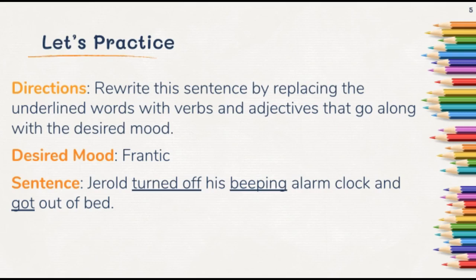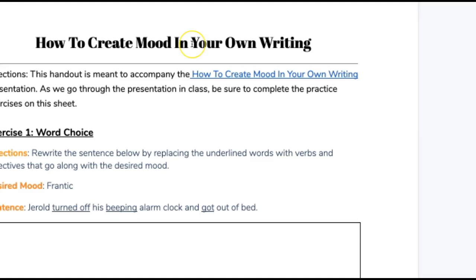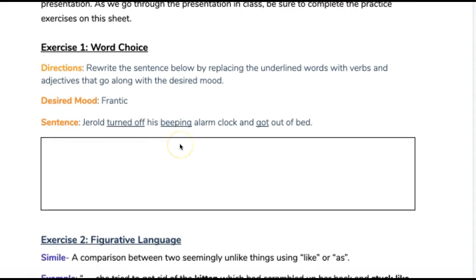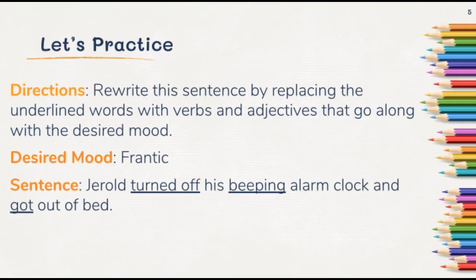We want to create a frantic mood, so go ahead and pause this video. On your document you'll see this exercise: rewrite the sentence below by replacing the underlined words with verbs and adjectives that go along with the desired mood. If I'm going for a frantic mood, instead of 'Jared turned off his beeping alarm clock and got out of bed' — all those underlined words aren't very descriptive — I might say 'Jared slammed off his screeching alarm clock and scrambled out of bed.' That creates a much more frantic mood.